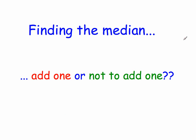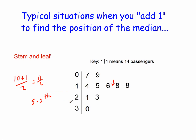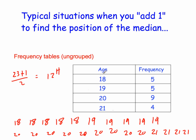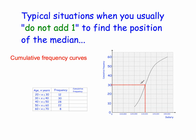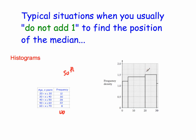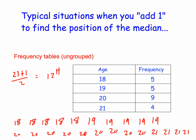To summarise: situations where you add one are when values are in a list, a stem and leaf diagram, or a frequency table with ungrouped discrete values like 18, 19, 20, 21. Situations where you typically don't add one are grouped frequency tables, cumulative frequency curves with grouped data, and histograms — because the data is grouped, you don't know the exact numbers, and it's an estimate anyway. Some mark schemes will allow you to add one, but for these grouped data questions the standard expected approach is to not add one.